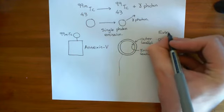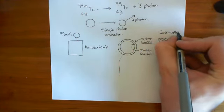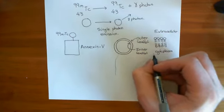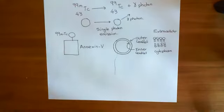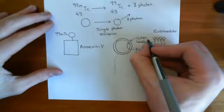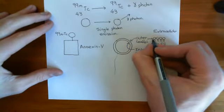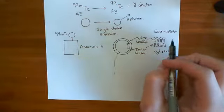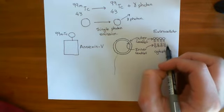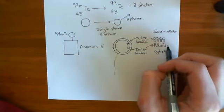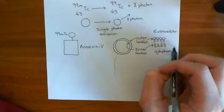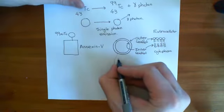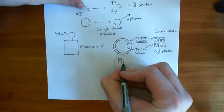This is the extracellular fluid. The extracellular fluid and the cytoplasm will have water in them, so the polar heads interact more favorably there. This here is the outer leaflet and this here is the inner leaflet. There is a certain molecule found in the inner leaflet of the phospholipid bilayer, and that molecule is known as phosphatidylserine.